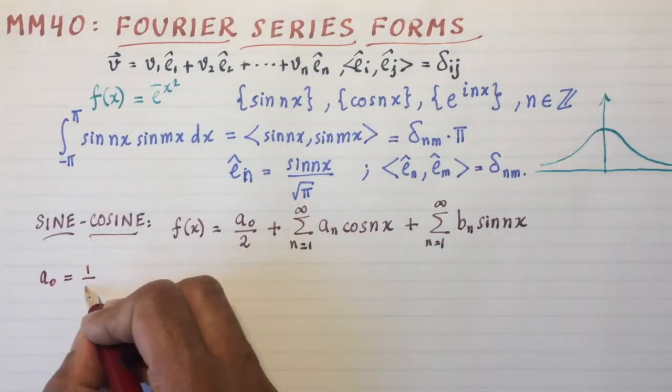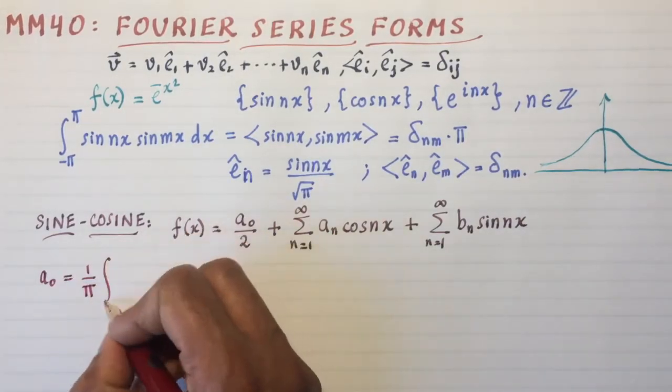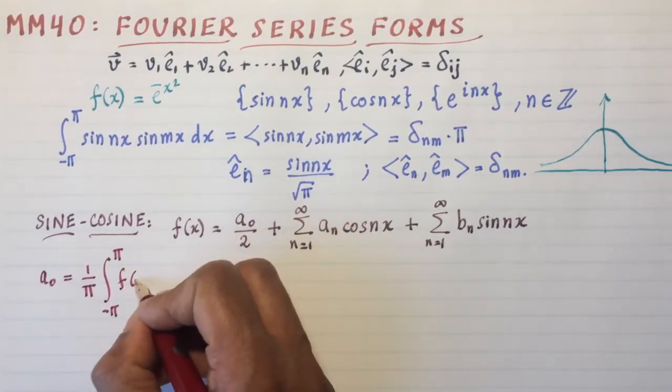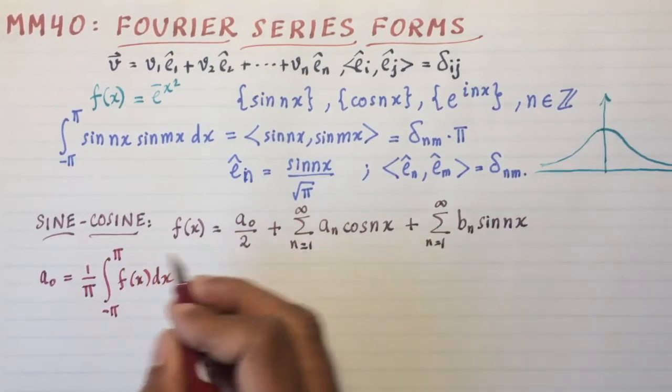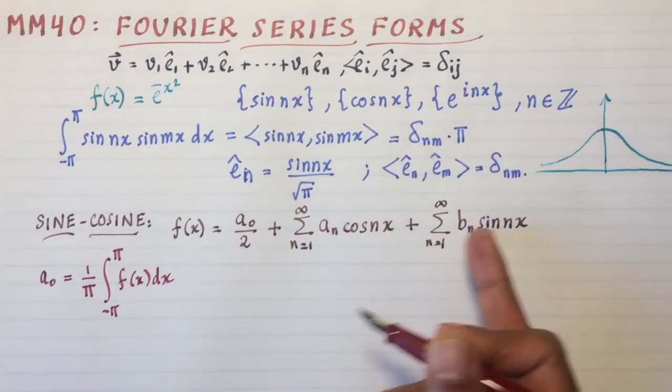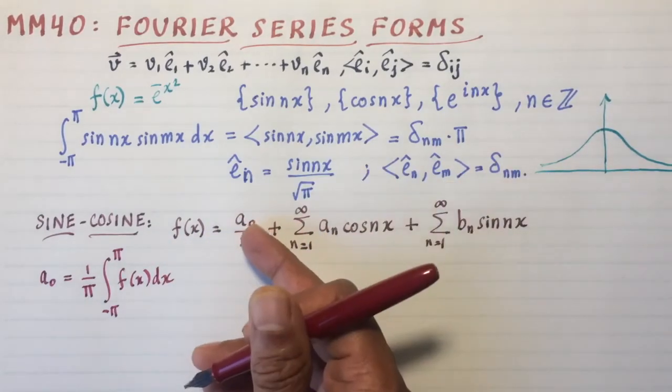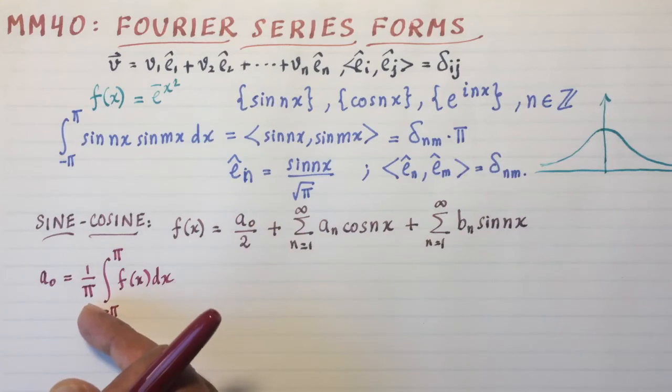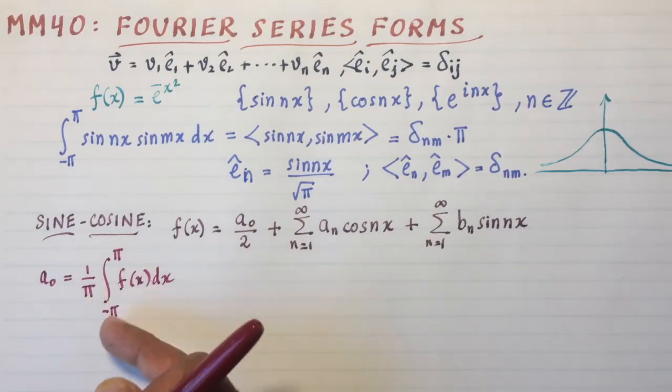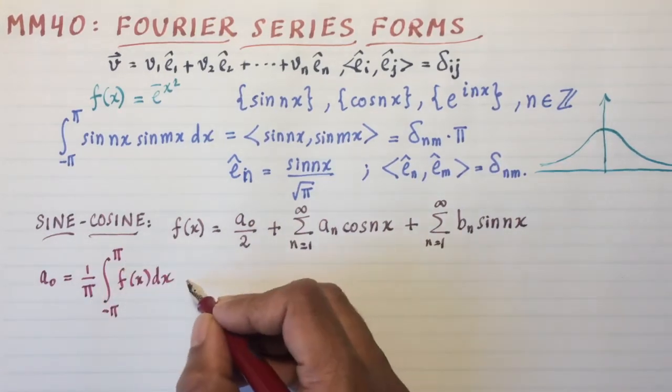A_0 will turn out to be 1/π times the integral from -π to π of f(x) dx. So simply by integrating this entire thing from -π to π, you get rid of these two terms and you just keep the a_0 term, and the π comes because of the fact that the interval goes from -π to π.